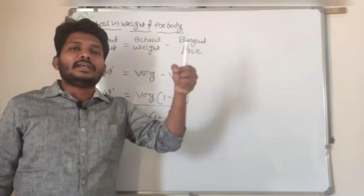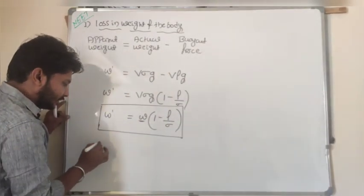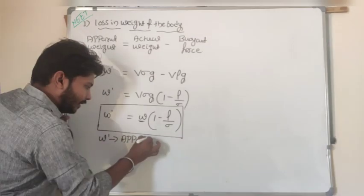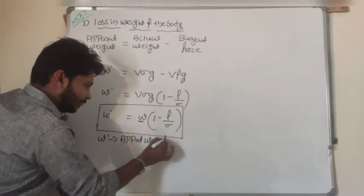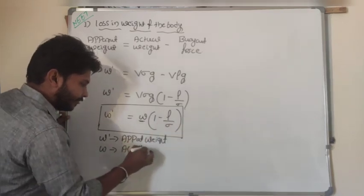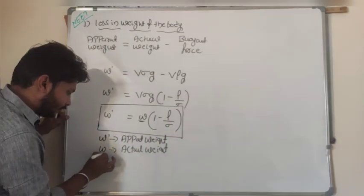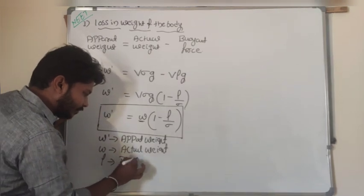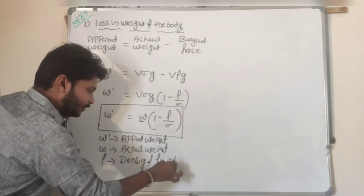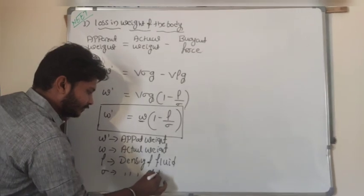So W' is the apparent weight, W is the actual weight of the body in air. The formula is W' = W(1 − rho/sigma). Here rho indicates the density of the fluid or liquid, and sigma indicates the density of the substance.